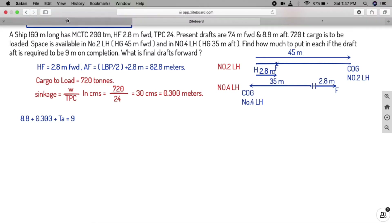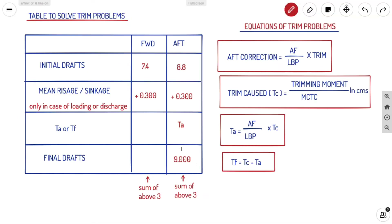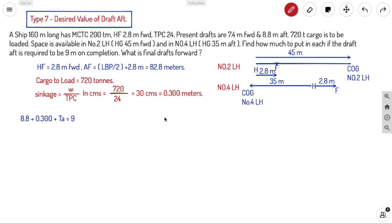We know initial aft draft, sinkage, and the required final aft draft, so we can find ta. The equation is: 8.8 plus 0.3 plus ta equals 9. Therefore ta equals 9 minus 8.8 minus 0.3, which equals minus 0.1 meters — that is minus 10 centimeters.